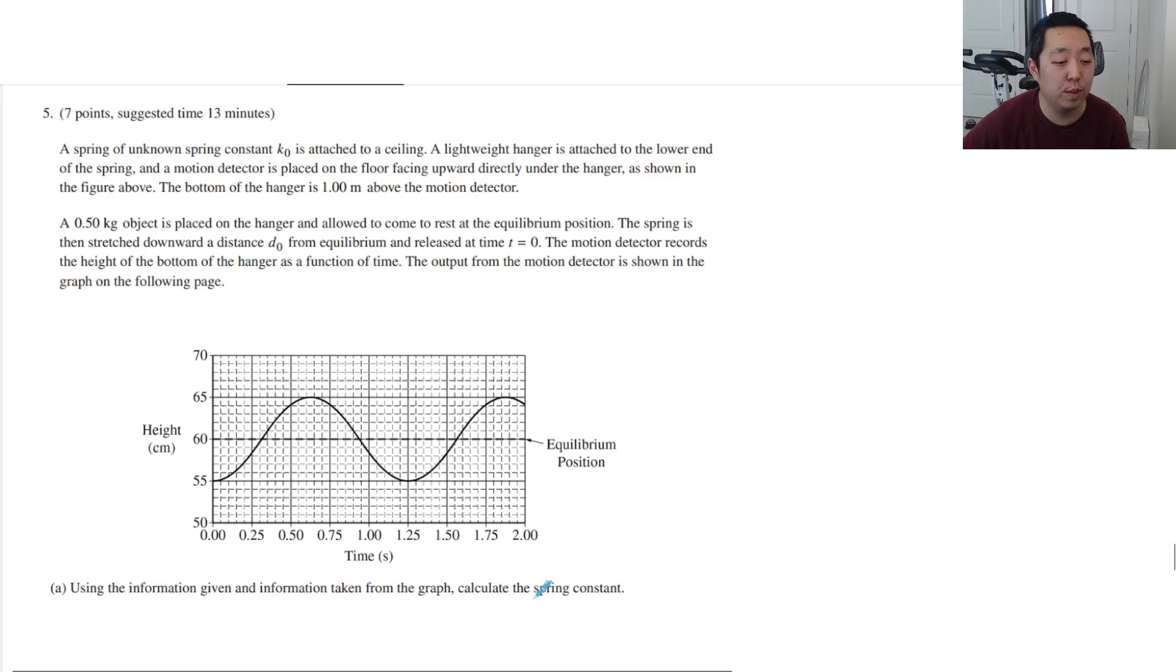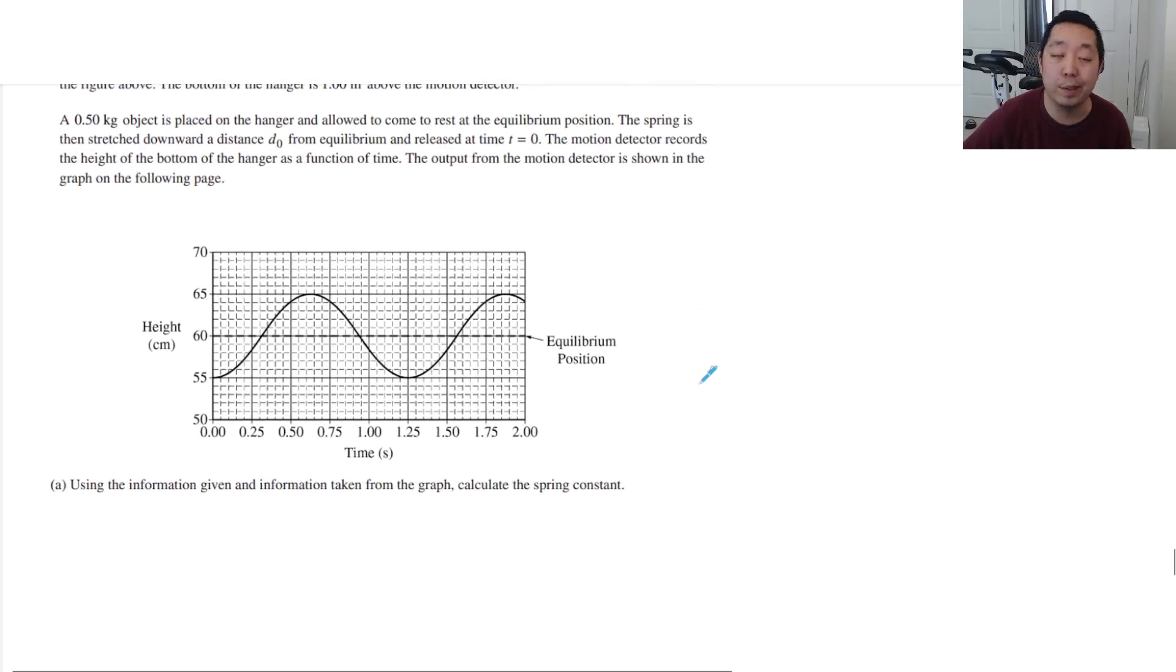Using information given and the information taken to calculate the spring constant. So it's going up and down. Well, what do we know about springs? There's three equations for all springs. One is energy, one half kx squared, one is force, but this one is oscillating, so I'm going to use this equation for the period. Why? Because I can observe the period. The period is the time from there to when it starts over, so it looks like the period is 1.25 seconds. So T equals 1.25 seconds. The mass is 0.5 kilograms, and then you can just solve for k.